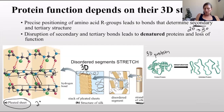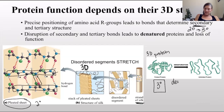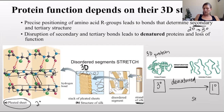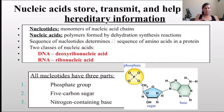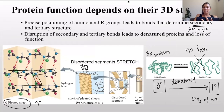If you have a 3D protein - its tertiary structure - it can break down or become denatured. If it becomes denatured, it goes back to its primary structure, just the sequence of amino acids, and loses its full three-dimensional shape. That's denaturation: if you have a denatured protein, you lose your function. No function. And that's it for proteins.